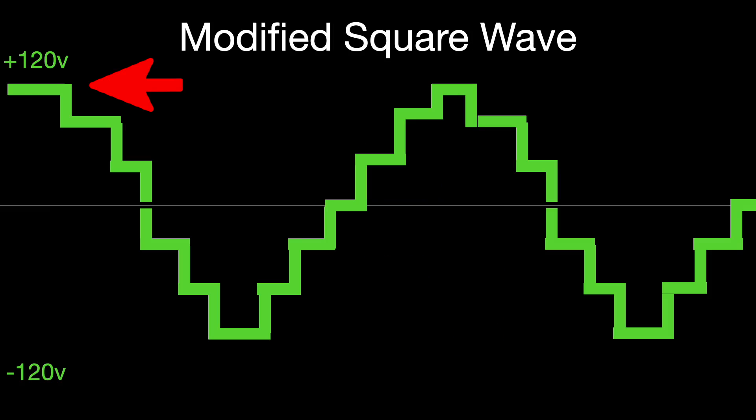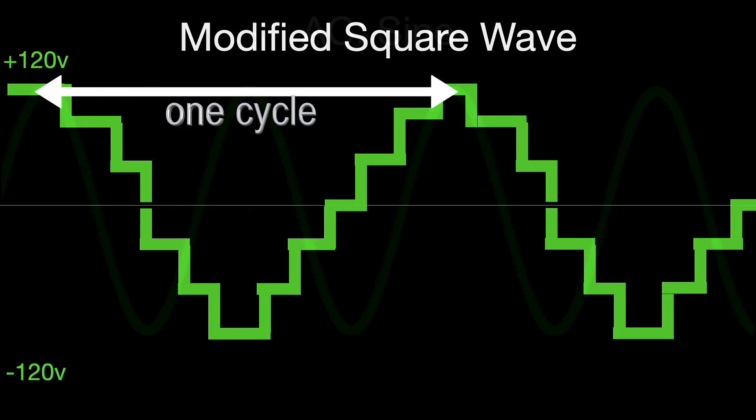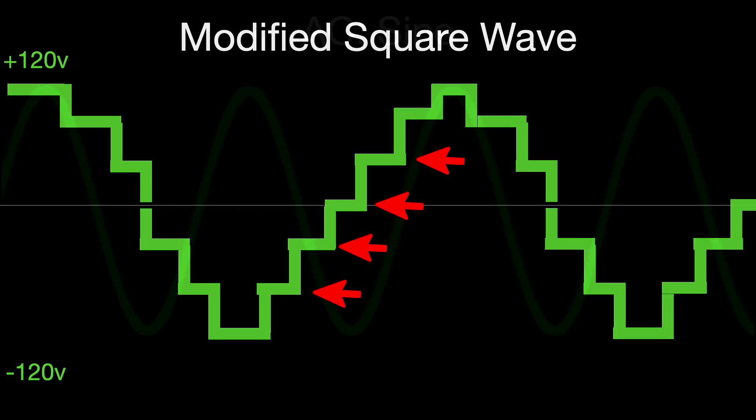Now the wave is going from plus 120 volts to minus 120 volts and then back up to plus 120 volts. That's one cycle. That's still happening 60 times per second. The high frequency inverter is putting a lot more individual steps into these cycles.